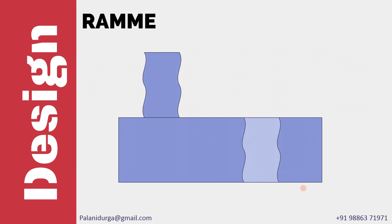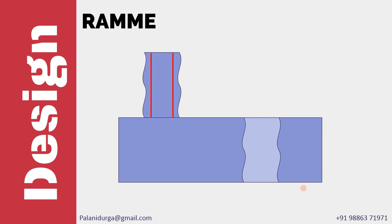Let's take this example. Here again we have an external feature of size and an internal feature of size. For the external feature, we have an imaginary envelope which expands and then touches the low point of the external feature. At the same time, it is taking the orientation of the datum reference. So this is an example of the related actual minimum material envelope of the external feature.